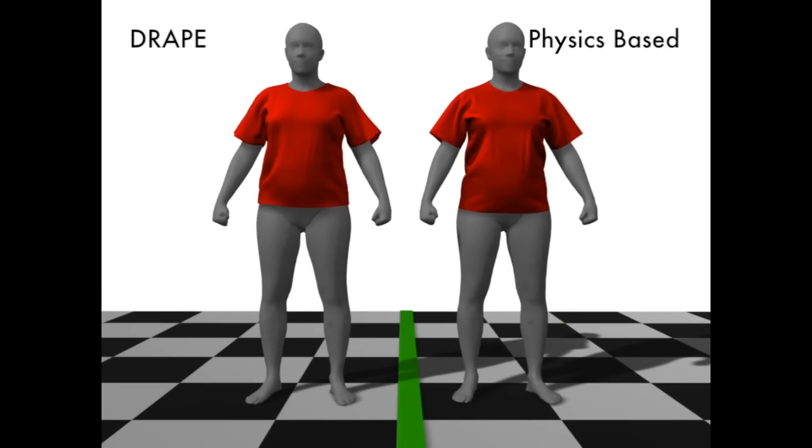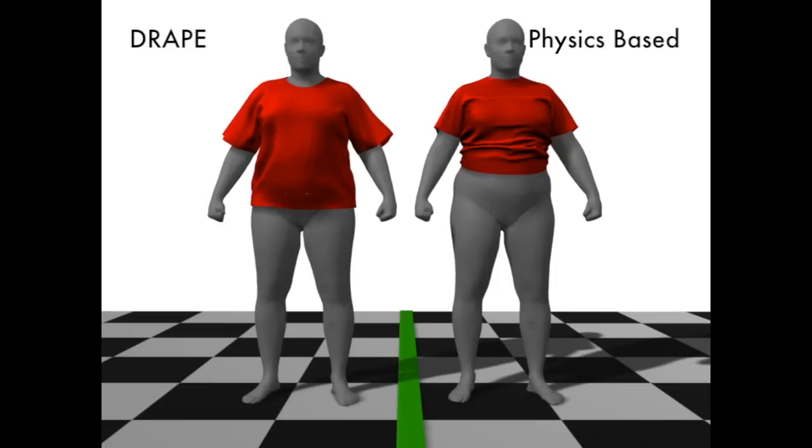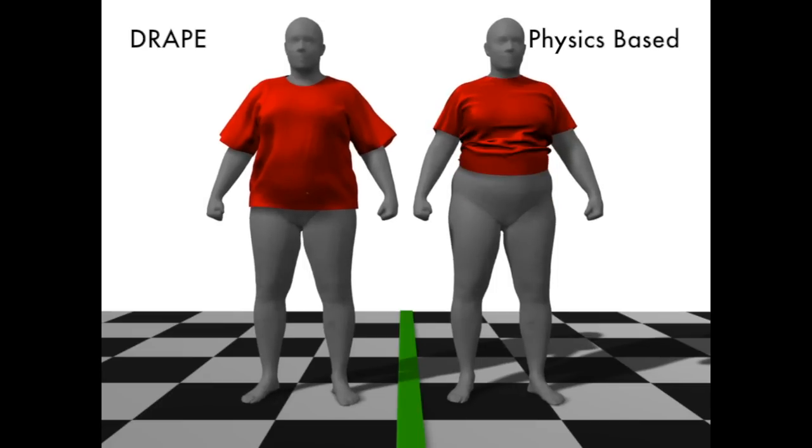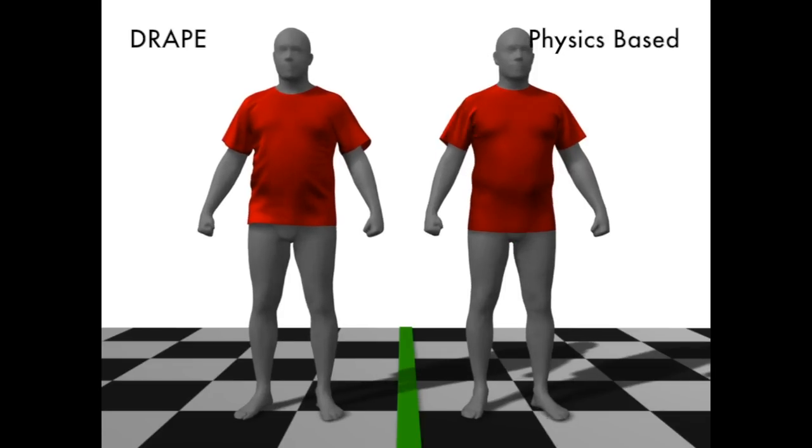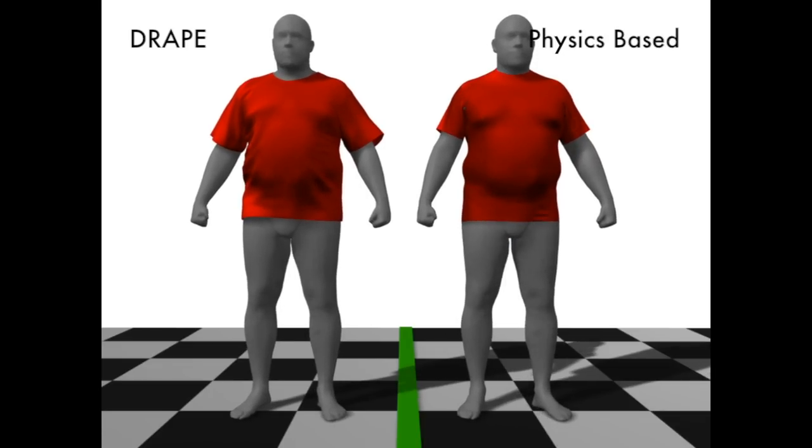Here we dress a gradually changing body shape. Notice how drape automatically adapts to different body shapes, while the physics-based simulation relies on the clothing size chosen by the user.